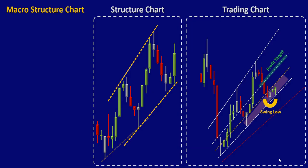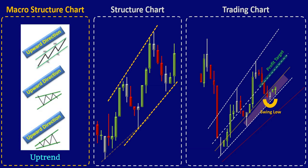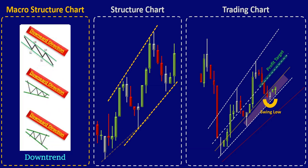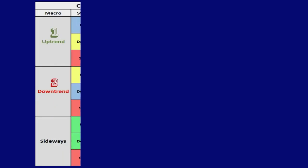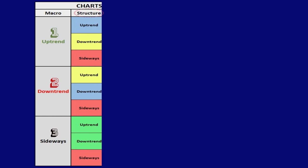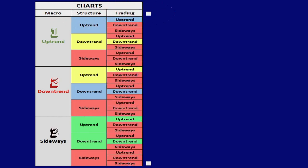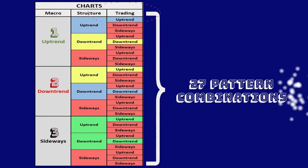The dynamic channel of the macro structure will have three possible patterns: an uptrend, downtrend, or sideways. When these three macro structure patterns are combined with the two structural and trading chart patterns, it can provide 27 possibilities.